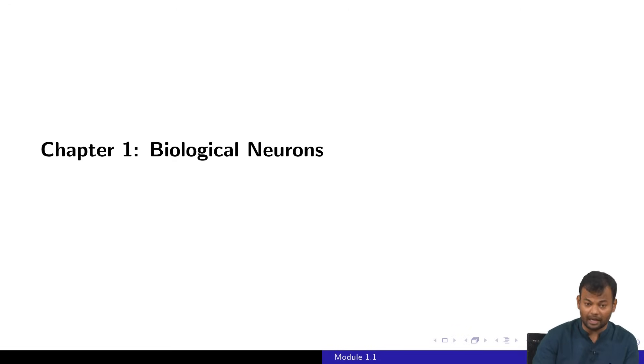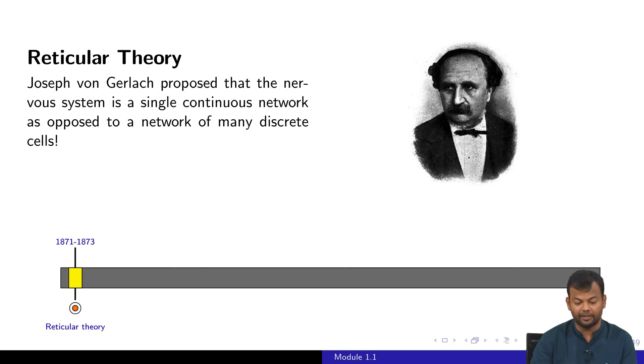Let us start with the first chapter on biological neurons. We'll start with biology and talk about the brain and the neurons within the brain. Way back in 1871-1873, Joseph von Gelach proposed that the nervous system is a single continuous network as opposed to a network of many discrete cells. This theory was known as the reticular theory.